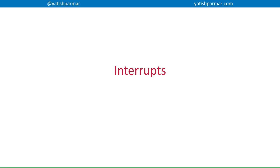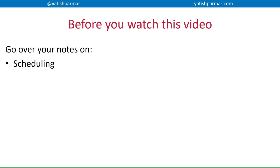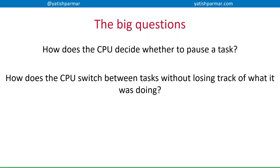This is the fifth video on 6.1 interrupts. Before you watch this video, make sure you go to your notes on scheduling so you remember what scheduling algorithms do and about preemptive schedulers. The key thing here is to do with preemptive scheduling. The big questions of this video are: how does the CPU decide whether to pause a task, and how does the CPU actually switch between tasks without losing track of what it was doing?